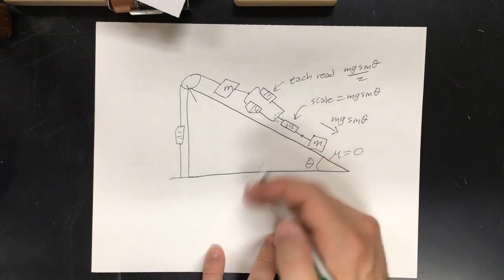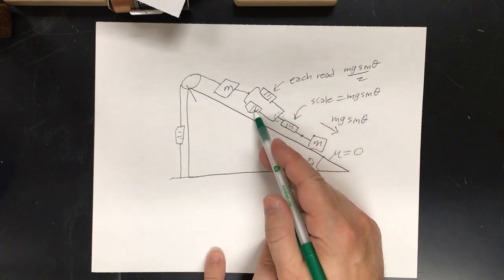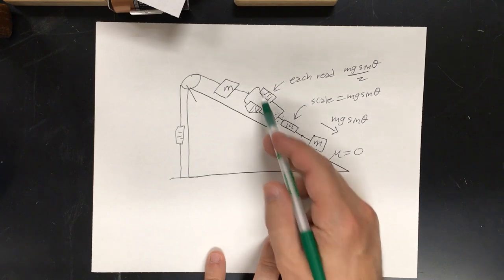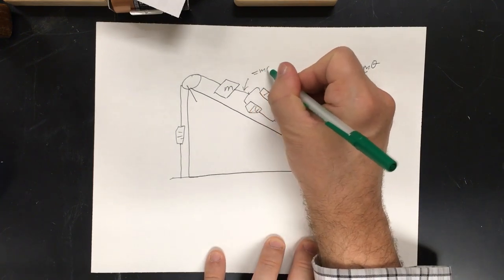So, the down the ramp and up the ramp must be equal. Likewise here, this must be mg sine theta over two, mg sine theta over two. Then, this one right here must equal mg sine theta.